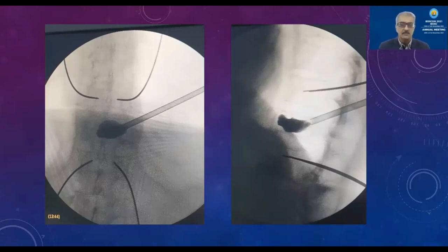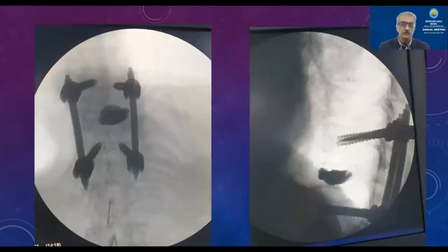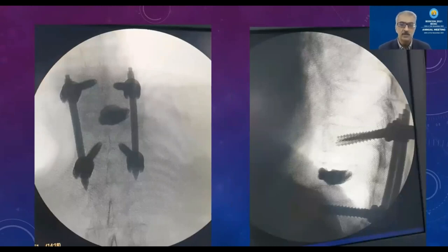Once the cement is set after 15 to 20 minutes, remove the working channel. This is how the final picture looks. We added percutaneous screws because there was a problem with posterior tension band on the MRI. Looking at the pre-op image and the post-op image, you can see the restoration of height.